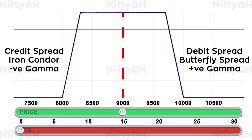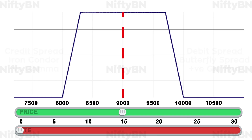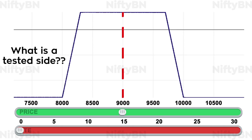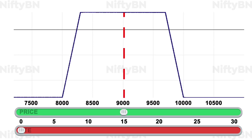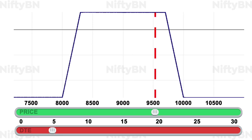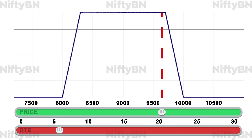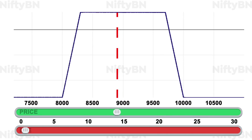In a previous video, we learned how to use a bull call spread — a debit spread — to manage a troubled iron condor. Now let's see how we can use butterfly spreads to adjust the tested side of an iron condor. The tested side is the side closest to being in the money; the untested side is the side furthest out of the money. For example, if the price of the underlying moves up, the call side would become the tested side. Conversely, if the price moves down, the put side would become the tested side.